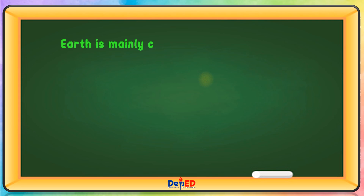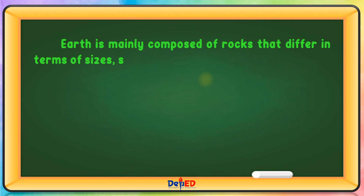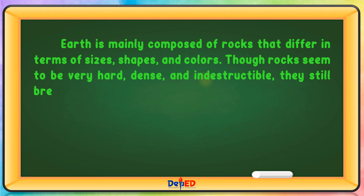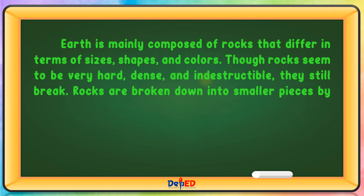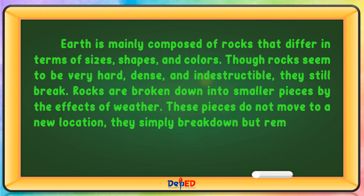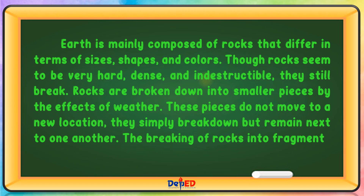Earth is mainly composed of rocks that differ in terms of sizes, shapes, and colors. Though rocks seem to be very hard, dense, and indestructible, they still break. Rocks are broken down into smaller pieces by the effects of weather. These pieces do not move to a new location — they simply break down but remain next to one another.